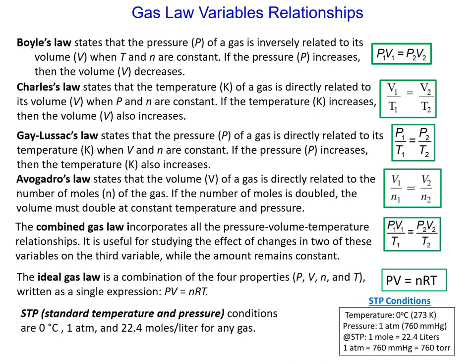The ideal gas law is a combination of the four principles P, V, n, and T, written as a single expression: PV equals nRT. These formulas are shown on the right side of this slide.